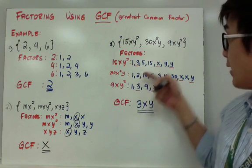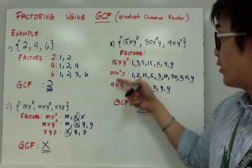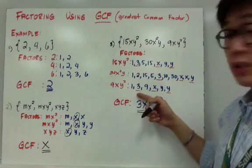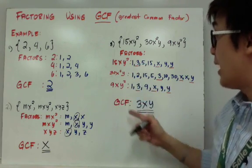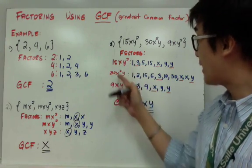So for 15, the greatest number that could divide 15, 30, and 9 is 3 because that's the common number for all these three terms. And for my variables, for my x's,